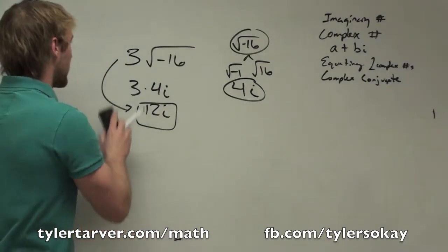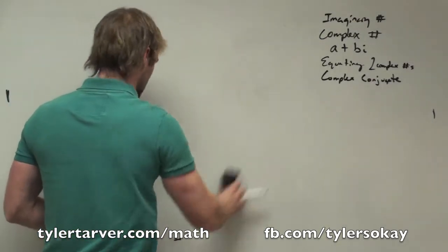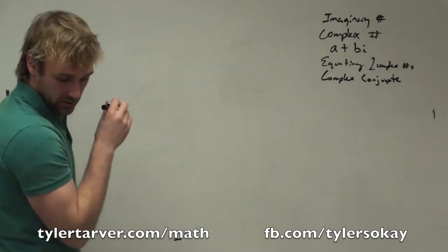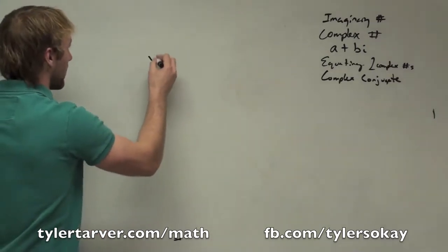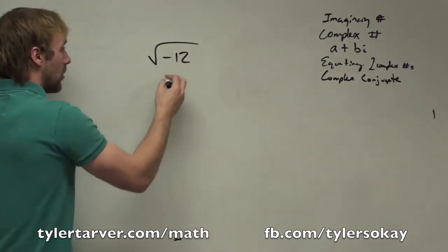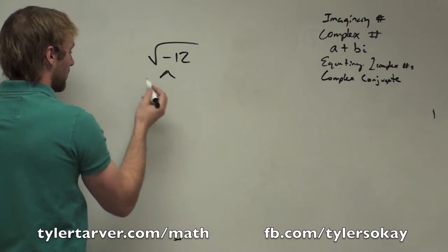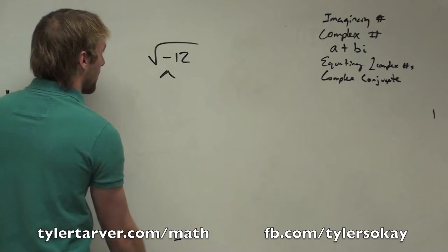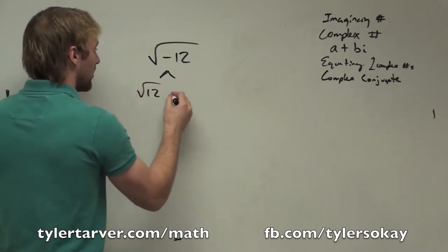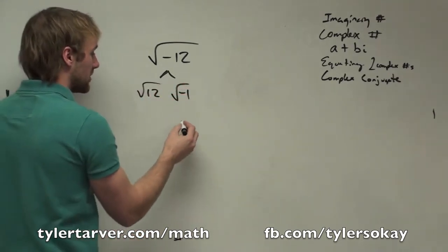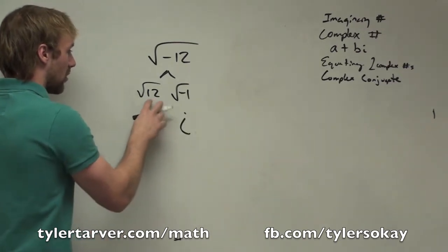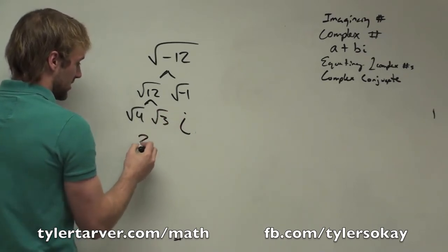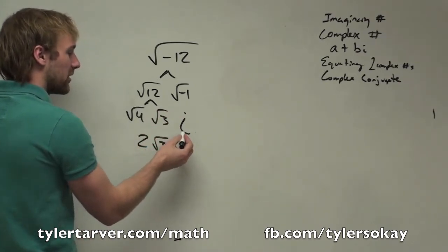Let's do one without me explaining it so I can show how easy it is. Let's do radical negative 12. We can split that up into radical 4. Actually, I'll split it one time, and then we'll split it again. We've got radical 12, radical negative 1. What do we know a radical negative 1 becomes? i. Radical 12 I can split into 4 and 3. Radical 4, radical 3. That's 2, radical 3.